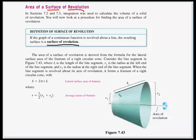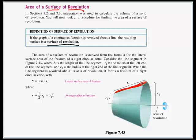In the last video we talked about arc length, so we found the length of a line segment. To go from just an arc to a surface of revolution, we're going to rotate that arc about an axis of revolution and create a solid surface.